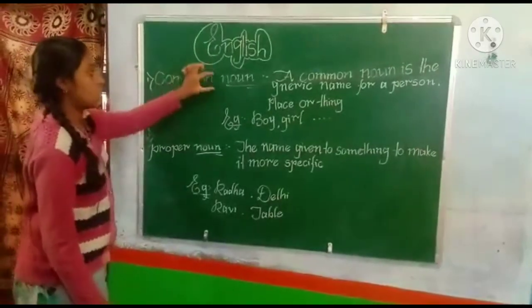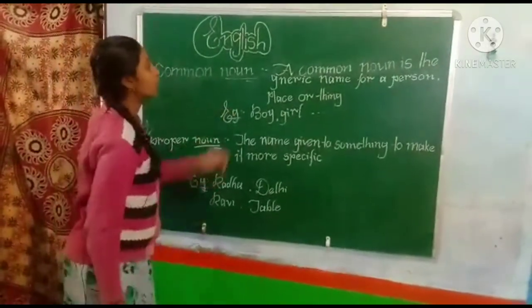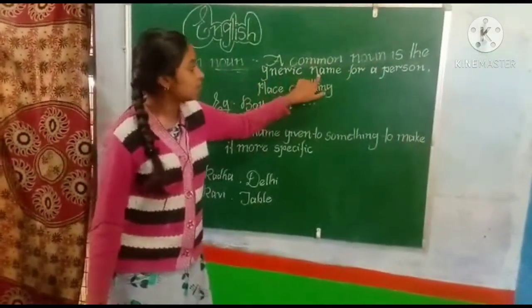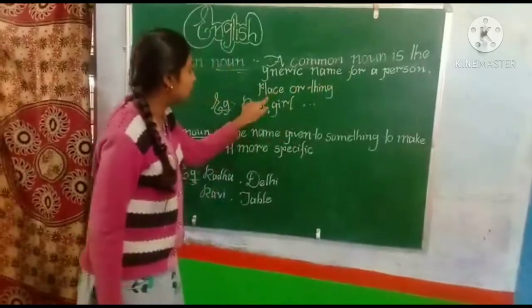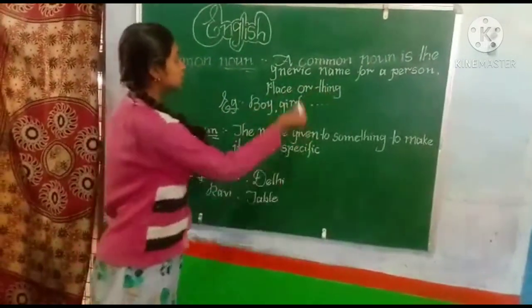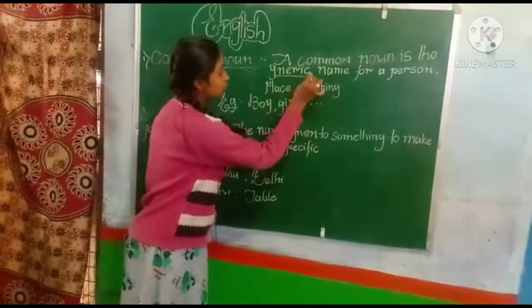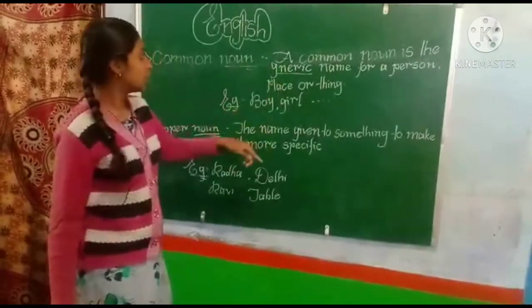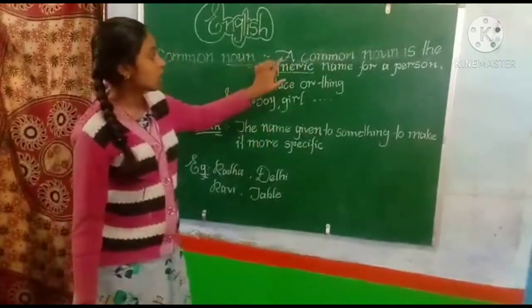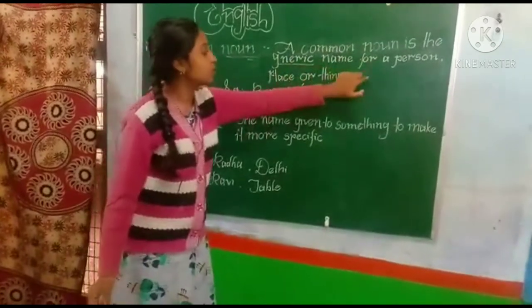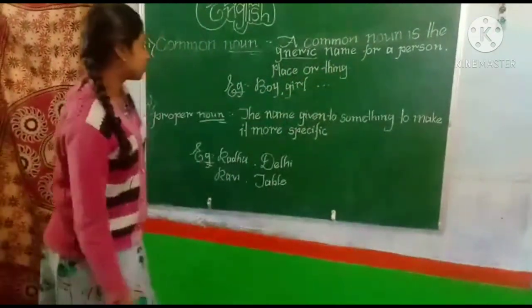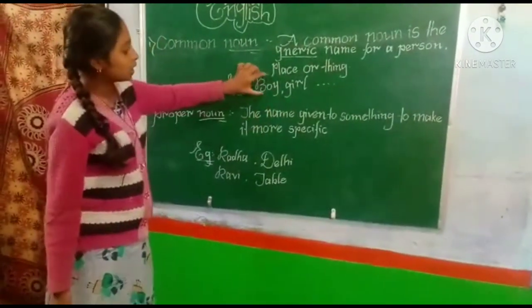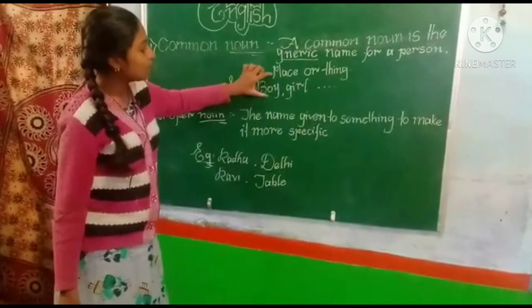First one is common noun. What is common noun? A common noun is the generic name for a person, place, or thing. Here, generic means a commonly used name is called generic.